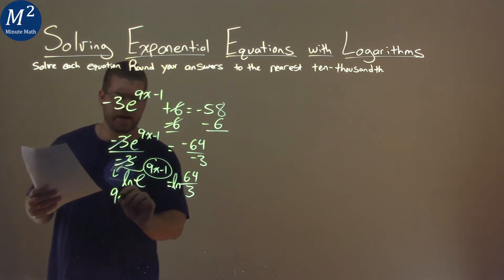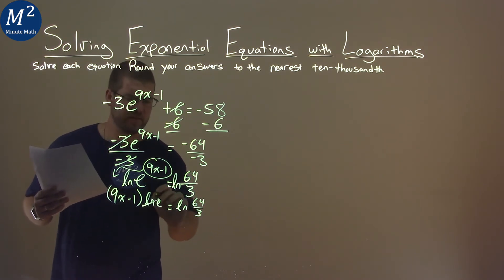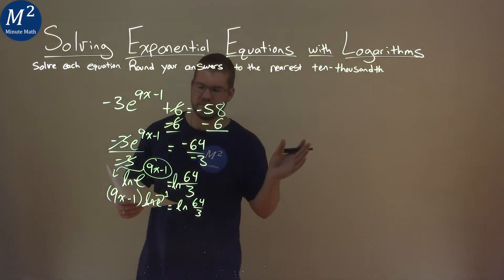That gives us 9x minus 1 here multiplied by natural log of e, and that's equal to natural log of 64 over 3. Well, natural log of e is just 1, so 1 times anything, we can get rid of it.